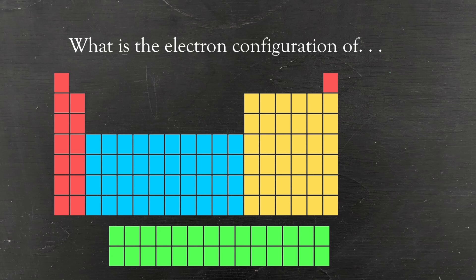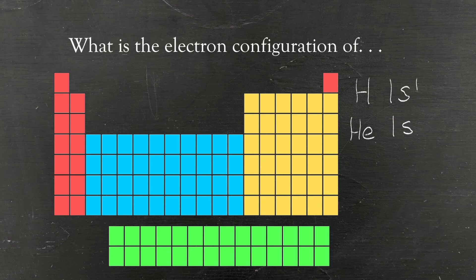Let's start with a very simple example: hydrogen. Hydrogen is the very first element — it's in the first row of the periodic table, so we start by writing a 1. It's color-coded red because those are s orbitals, so it's an s, and it has just one electron, making it 1s1. Moving to the next element, helium — still in the first row, still red, still s, but now there are two electrons, so it's 1s2.